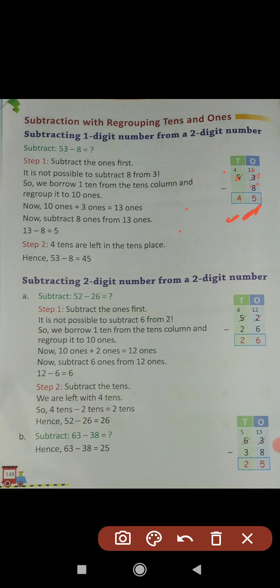Second example — subtracting a 2-digit number from a 2-digit number. Subtract 52 minus 26. 52 is a 2-digit number and 26 is also a 2-digit number. It is written for you in the correct columns: 2 and 6 are in the ones place, and 5 and 2 are in the tens place. Subtract the ones first: we have to subtract 6 from 2 — can we? No, it is not possible, because 6 is greater than 2.